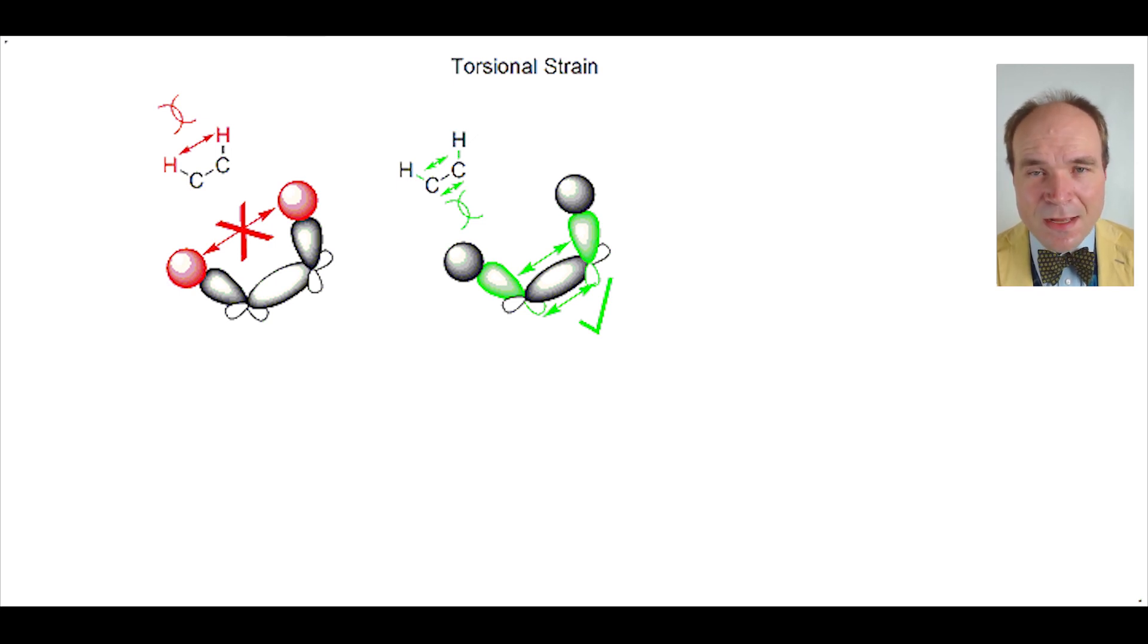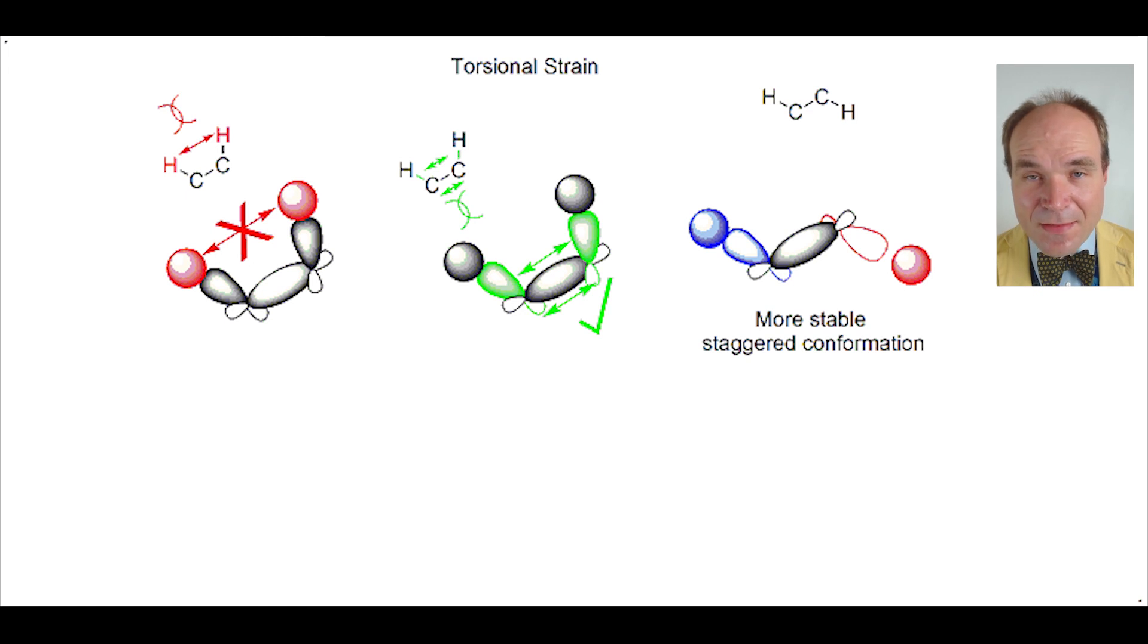But the largest contributing factor to torsional strain is nothing to do with the eclipse conformation. It's the fact that with the staggered conformation, there is beneficial stabilization that we'll talk about in a moment.